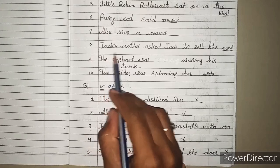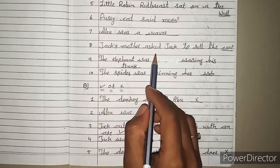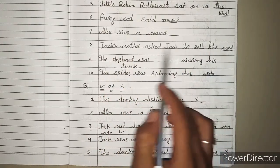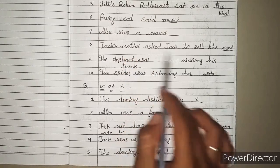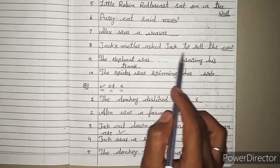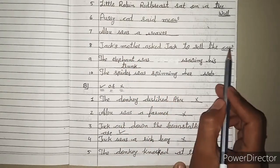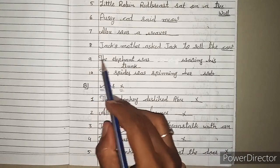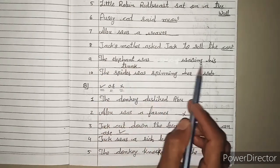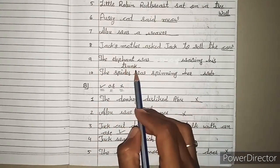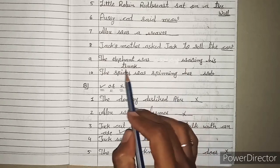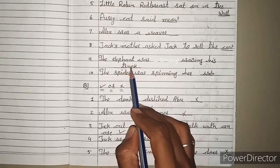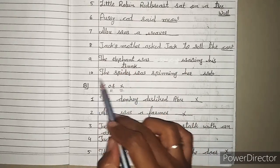8. Jack's mother asked Jack to sell the blank. Jack की mother ने Jack को क्या sell करने के लिए कहा था? Cow, C-O-W. 9. The elephant was waving his blank. Elephant क्या हिला रहा था? उसकी trunk, T-R-U-N-K.